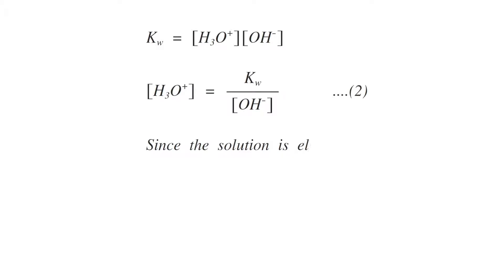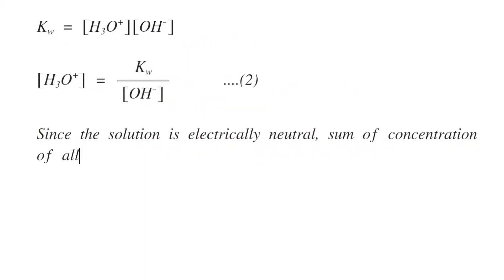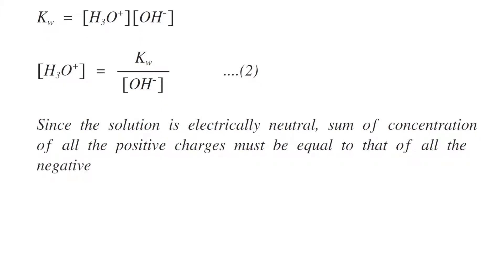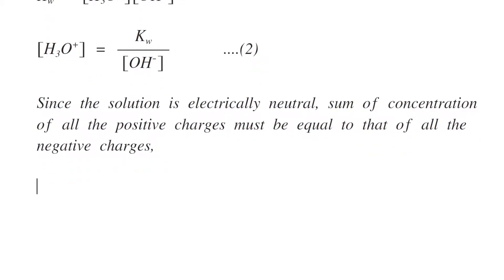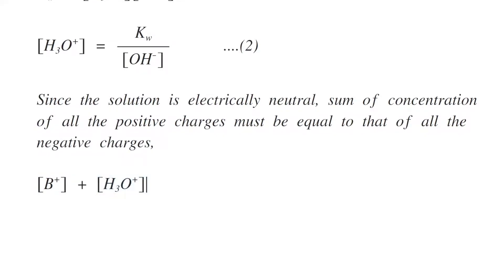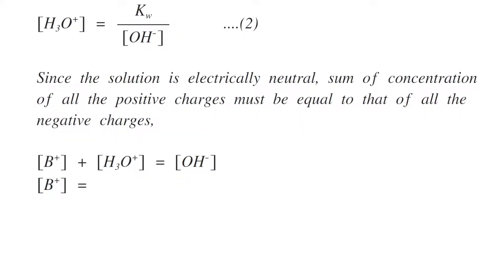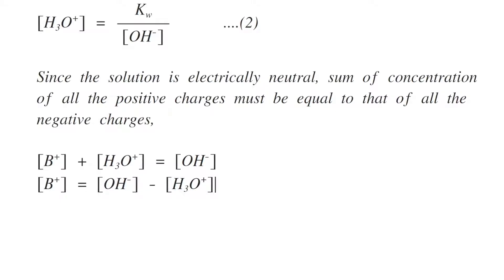Since the solution is electrically neutral, the sum of the concentration of all positive charges must equal that of the negative charges. So all positive charges — [B⁺] + [H₃O⁺] — must equal the negative charges, that is [OH⁻]. Therefore, [B⁺] equals [OH⁻] minus [H₃O⁺].